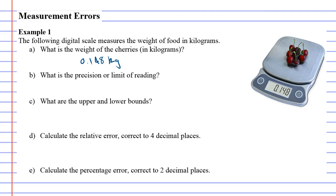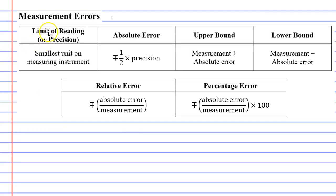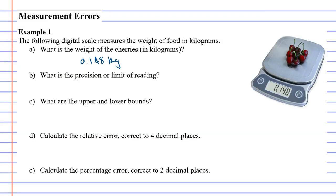Question B, not too bad either. It's saying what is the precision or limit of reading. Back here it says the limit of reading or precision is the smallest unit on your measuring instrument. So what is the smallest unit on this measuring instrument? And basically the smallest unit of measurement for this one would be 0.001 and the reason for that is because